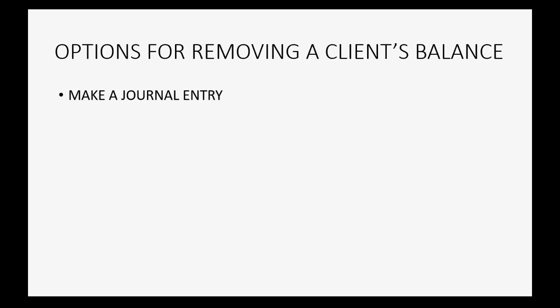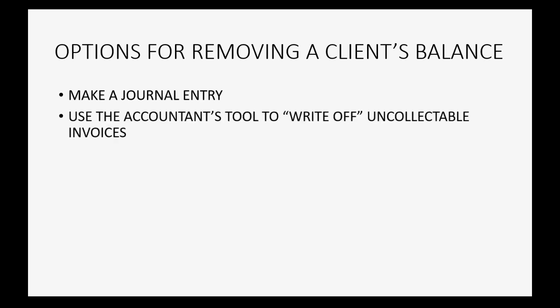So what are the options for removing a client's balance if they become uncollectible? Accountants would normally make a journal entry and include on the same line as the unearned legal fees in the journal entry they would put the client's name — we did something similar to this with an adjustment early on in this course. Another option is to use the accountant's tool that comes with QuickBooks Online, if and only if you are logged in as the accountant user. If you are logged in as the accountant user, you can use a tool called the write-off uncollectible invoices tool. However, the best procedure for a law firm to write off uncollectible clients is to do the procedure that we will learn here.